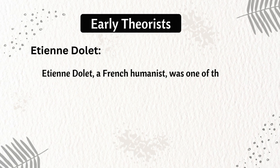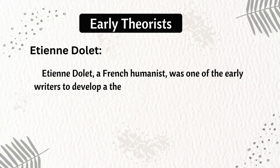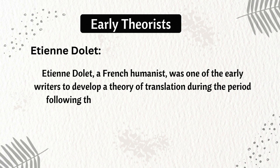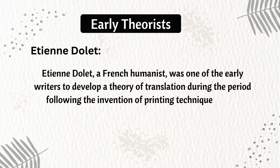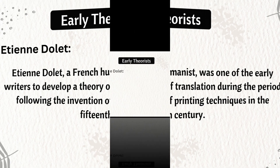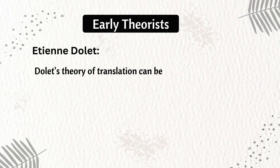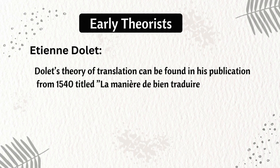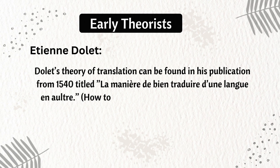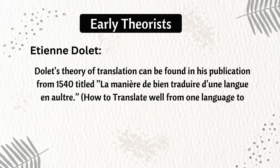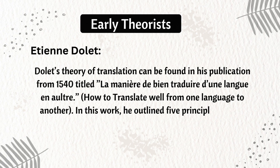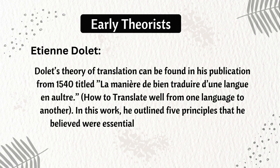Etienne Dolet, a French humanist, was one of the early writers to develop a theory of translation during the period following the invention of printing techniques in the 15th century. Dolet's theory of translation can be found in his publication from 1540 titled La manière de bien traduire d'une langue en autre — How to Translate Well from One Language to Another. In this work, he outlined five principles that he believed were essential for producing accurate and effective translations.